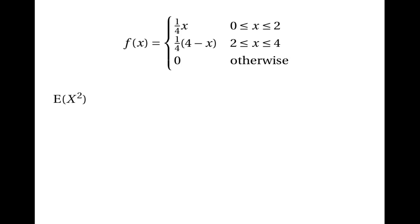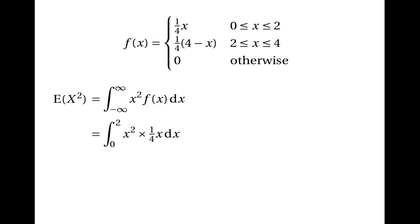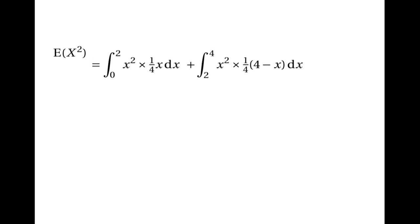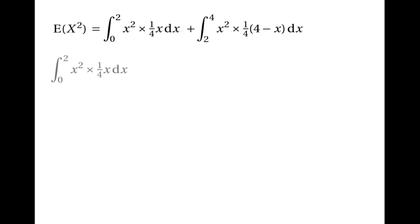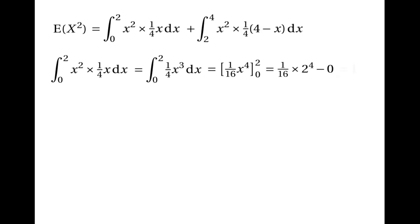To find the variance we need E[X²], which is the integral of x²·f(x) over all possible values. Because f(x) is piecewise defined, we integrate x²·(1/4)x between 0 and 2 and add the integral of x²·(1/4)(4 − x) between 2 and 4. For the first integral: the integral of (1/4)x³ from 0 to 2 gives (1/16)x⁴ evaluated from 0 to 2, which is (1/16)(16) = 1.